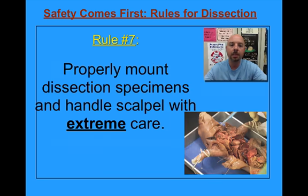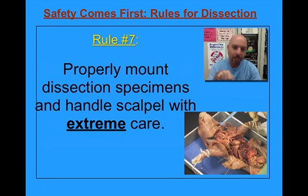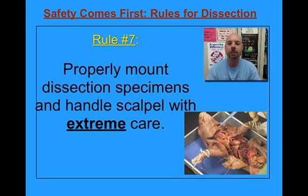Rule number seven is when we are doing dissections, we always want to make sure that we properly mount our dissections and handle the instruments — particularly the scalpel — with extreme care. We never do any dissections by holding the specimen and cutting into it with the scalpel. We also don't handle the scalpel the way we would handle a steak knife; we're not trying to saw into our specimen. And if you really have to struggle or work at cutting into your specimen, you're doing something wrong. Take a breath, step back, and re-evaluate what you're doing.